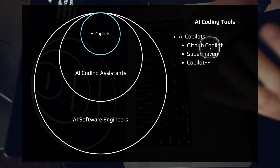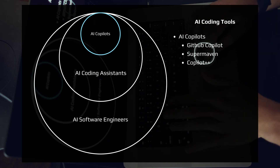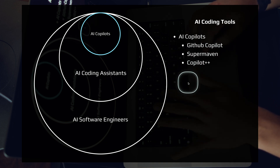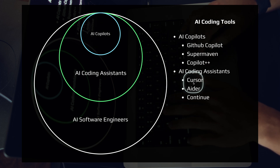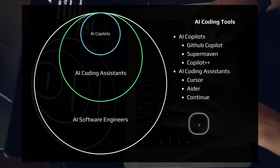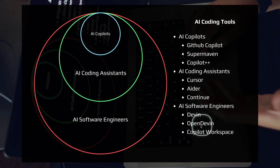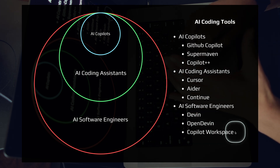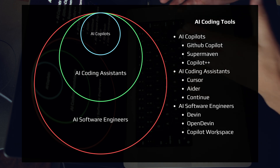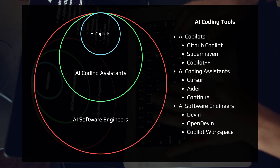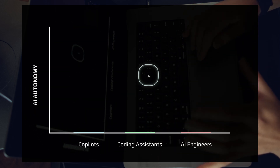Let's look at some specific tool examples. For AI coding tools — co-pilots — we have GitHub Copilot, SuperMaven, and Cursor's Copilot++. At the next level, AI coding assistants, we have tools like Cursor, Aider, and Continue. At the highest level, AI software engineers, we have Devin, OpenDevin, and Copilot Workspace. We need to be moving our technology stack into the future using tools powered by LLM technology.